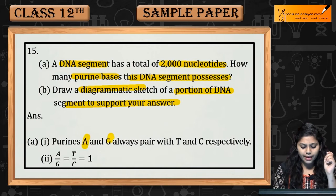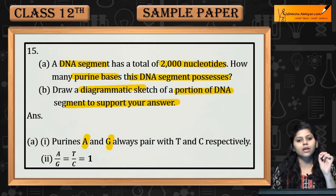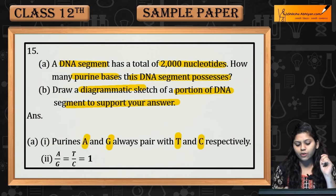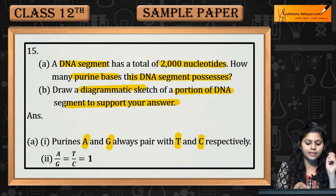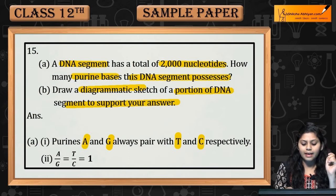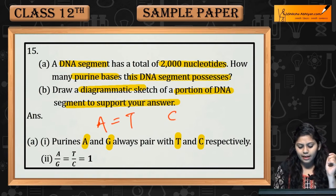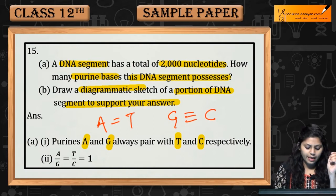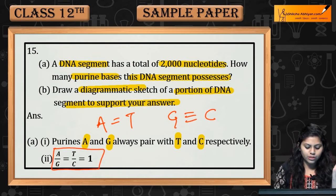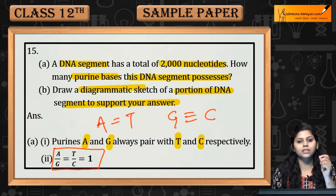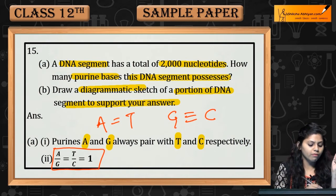First, purines are A and G. They always pair up with T and C — that is, A pairs with T, and G pairs with C. By Chargaff's rule, A/G is equal to T/C, which is equal to 1.